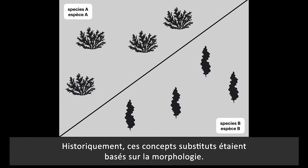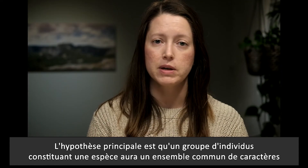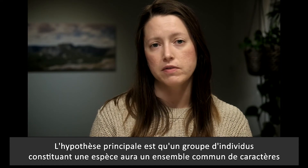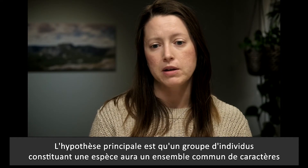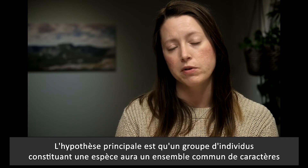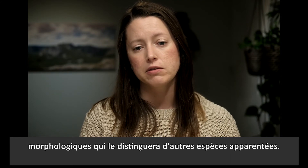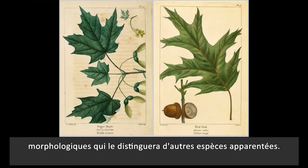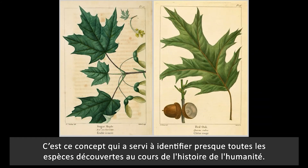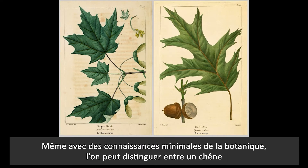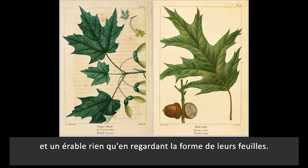Historically this has meant using a species concept based on morphology. The main assumption is that a group of individuals that make up a species will have a shared set of morphological characters that distinguish them from other related species. In practice this is how almost all species identification has been done throughout human history. Even someone with a minimal interest in botany can tell the difference between an oak tree and a maple tree just by looking at the shape of their leaves.